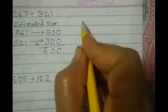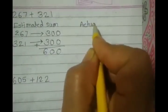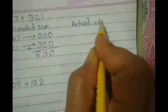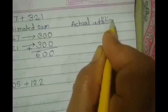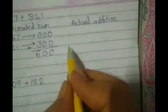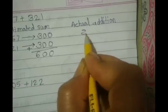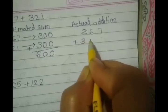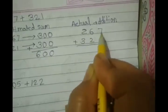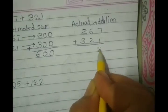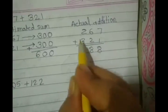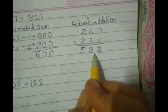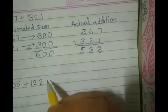Let's perform the actual addition. For actual addition now, 267 plus 321. 7 plus 1, 8, 6 plus 2, 8, 2 plus 3, 5. 588, which is near to the 600.